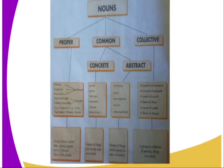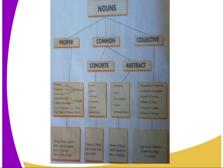We can see from the examples — examples of proper nouns: we have Kenya, England, Nairobi. And if we look at examples of abstract nouns, these are names of things that cannot be touched, such as honesty, love, corruption, music, atmosphere.